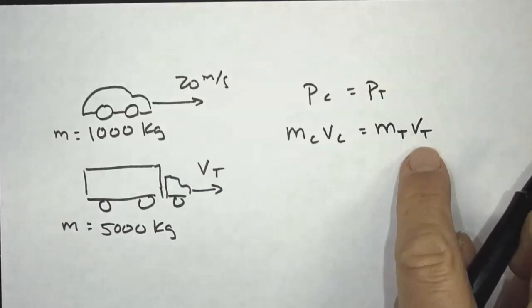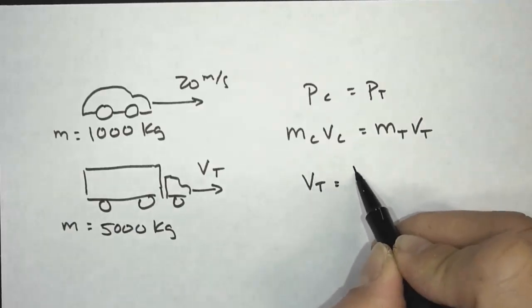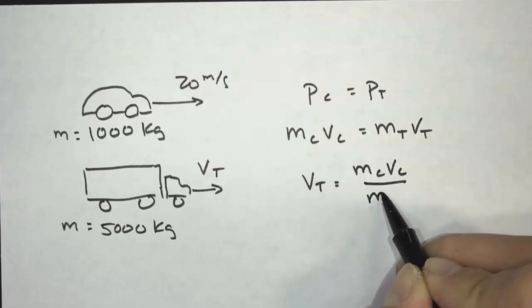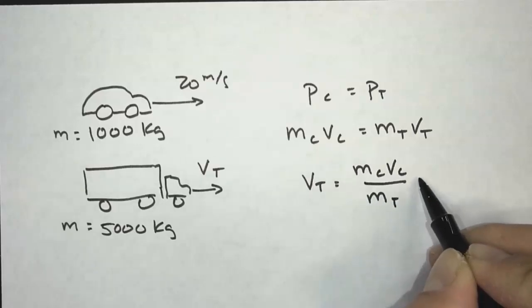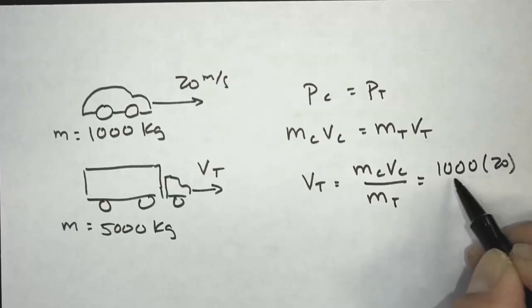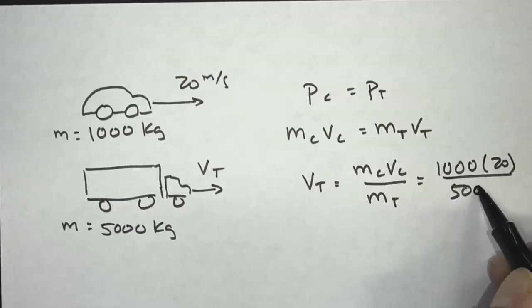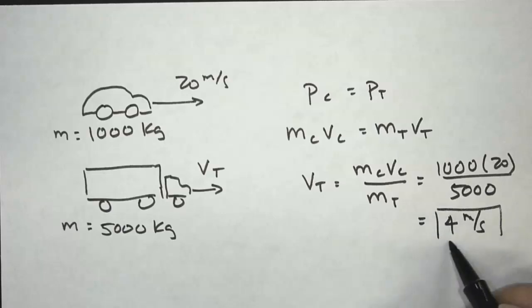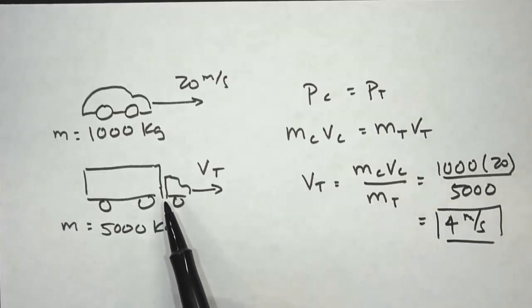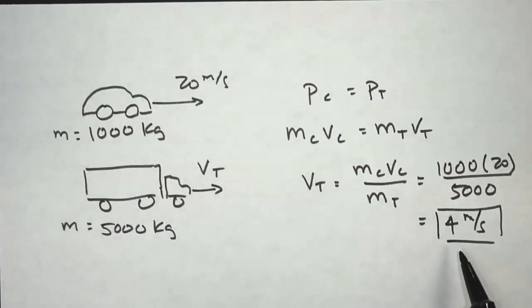And we're calculating for Vt. To find Vt, I'm going to divide Mt on both sides. So Vt is going to equal McVc divided by Mt. And if I plug in the numbers, I get 1,000 times 20. So that's the momentum of the car divided by the mass of the truck. And we get 4 meters per second. So even though the truck is much bigger, it can still have the same momentum as the little car as long as the velocity is less.